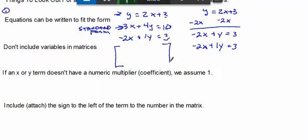Now, the second thing that I want you to consider when we're doing this: don't include variables in matrices. So when I'm writing this matrix, make sure that x's and y's do not appear inside of it. So this is actually going to be 3, 4, 10, and negative 2, 1, and 3.